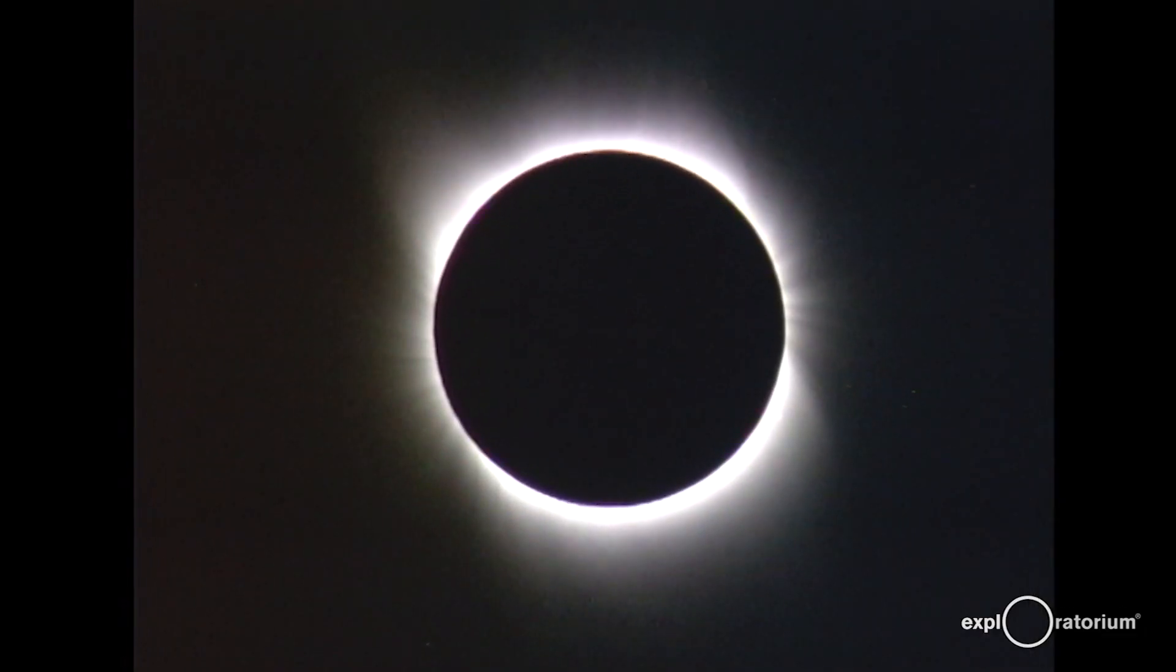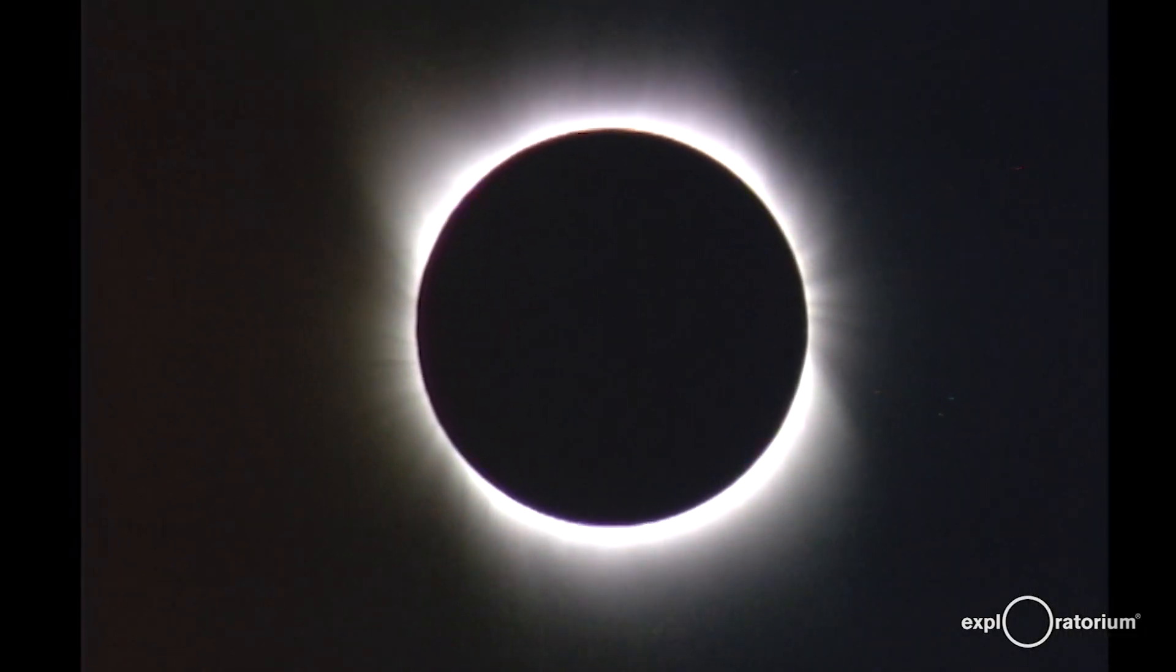One of the great things that happens during a total solar eclipse is that the sky goes dark and the stars come out.